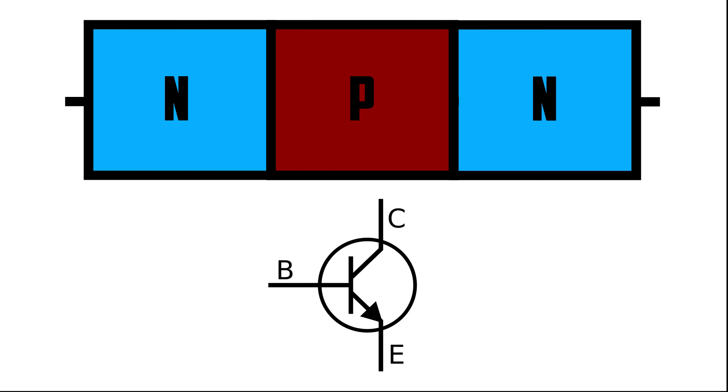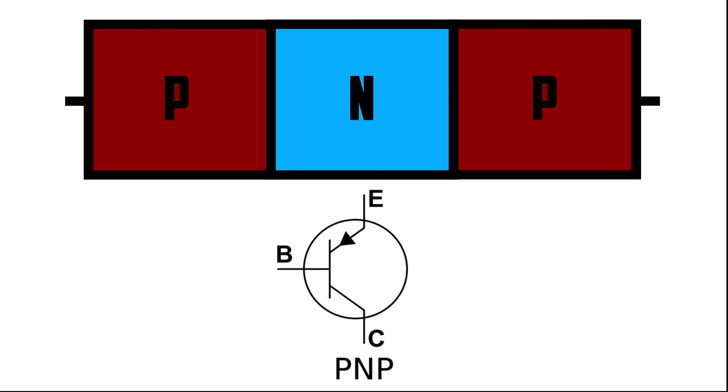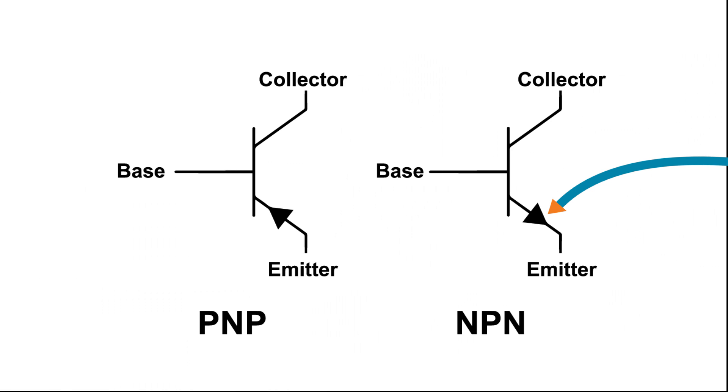A NPN transistor is similar, except it has two N-type layers on either side of one P-type layer. On the PNP transistor symbol, the arrow on the emitter still points towards the N-type layer, which in this case is in the middle. So the NPN transistor symbol has an arrow on the emitter pointing out, while the PNP transistor symbol has an arrow on the emitter pointing in.